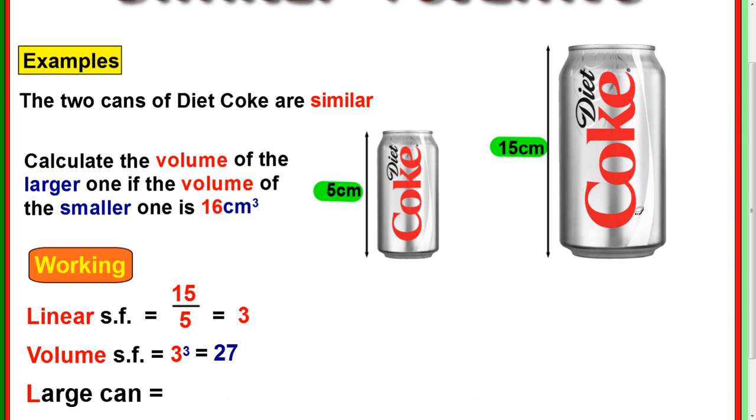So what we're saying here is, this can, the volume is 27 times bigger than this volume. So this volume is 16, so if you do 16 times 27, you get the volume of the bigger one, which is 432 centimetres cubed. Or if you wanted millilitres, 432 millilitres.